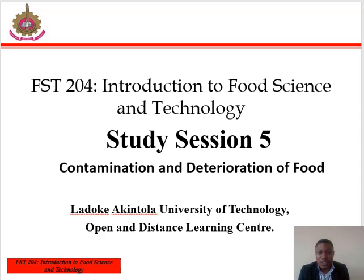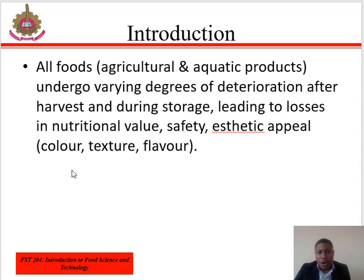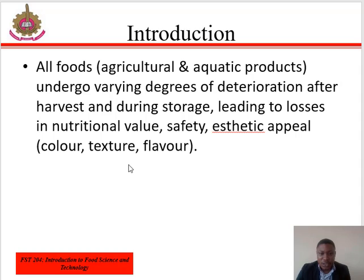Welcome to study session 5, Introduction to Food Science and Technology. We will be discussing contamination and deterioration of food. All foods, including aquatic and agricultural products, undergo varying degrees of deterioration after harvest and during storage, leading to losses in nutritional value, safety, and aesthetic appeal, which involves color, texture, and flavor.